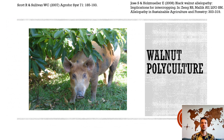Livestock is feasible to introduce after 15 years, when trees are large enough to withstand damage and do not need fencing. Heifers and hens benefit from partial shade under an adolescent walnut stand.